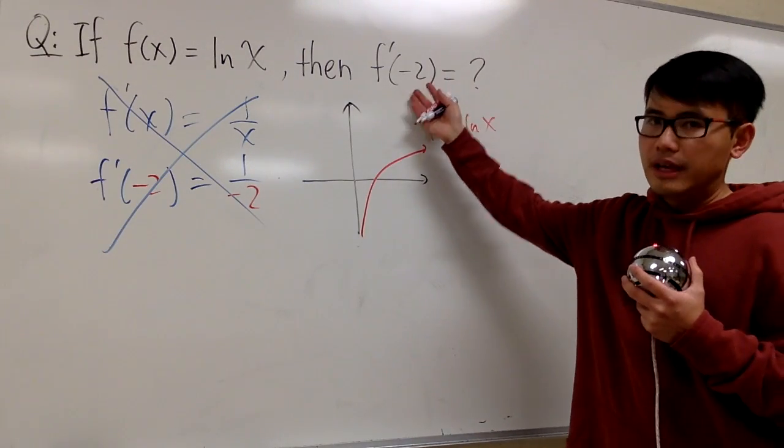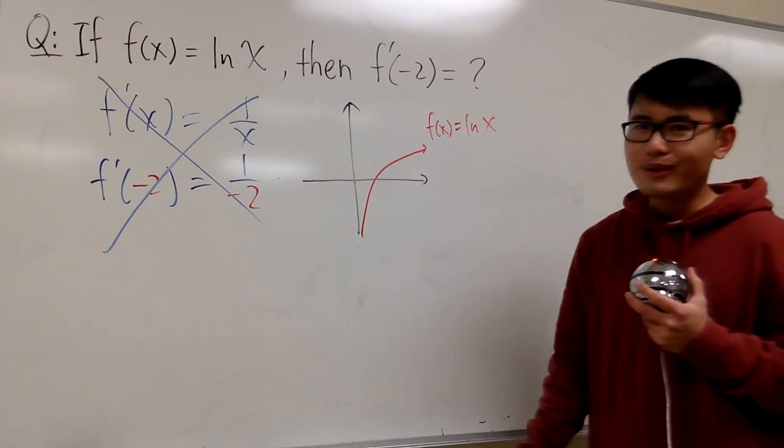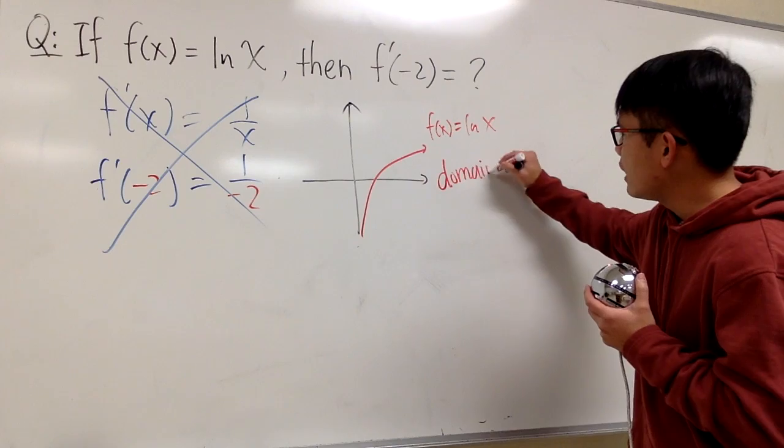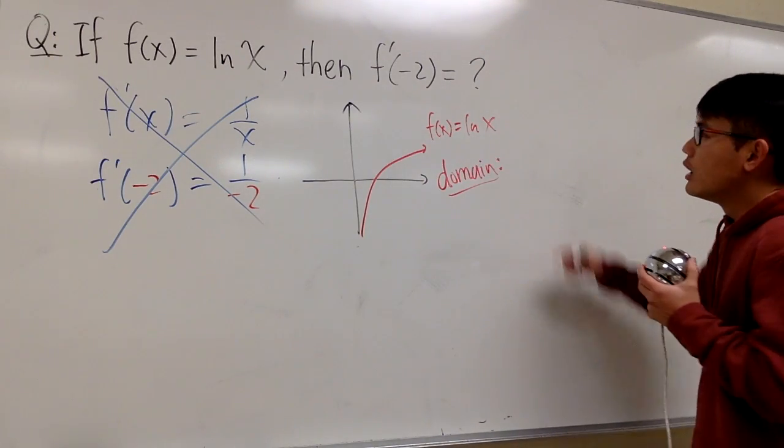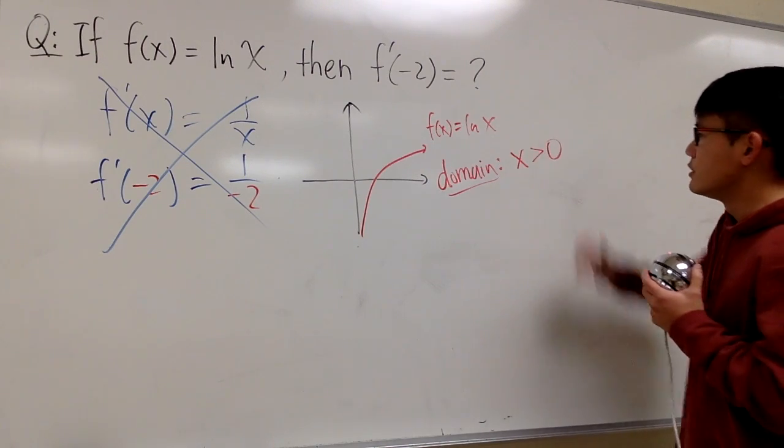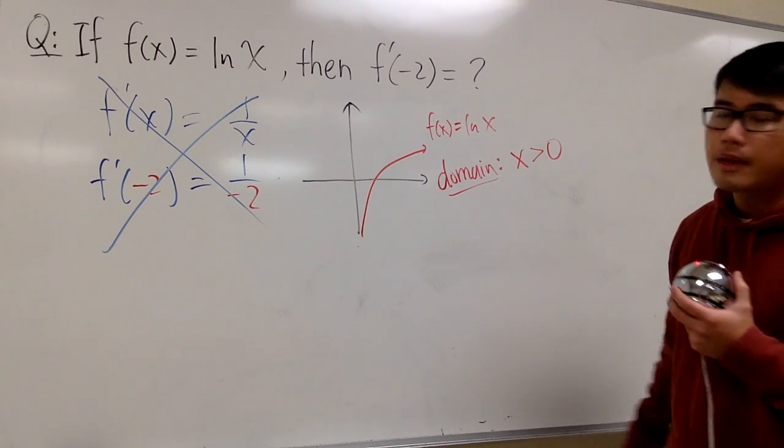Can x even be negative 2? No, right? So, that's the idea of what we mean by the domain. What are the possible x values? If the function is ln x, we know x has to be greater than 0. That's the domain.